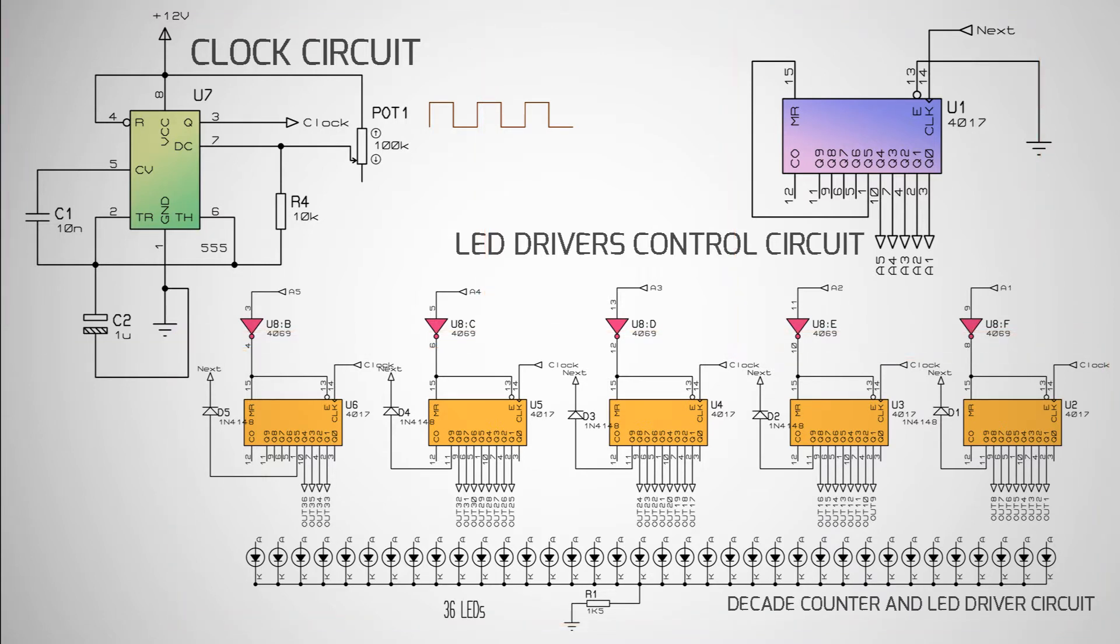First of all, let's examine the integrated circuits we use in detail. If you know how the circuit parts work, you can skip this section. I built the clock circuit using the 555 integrated circuit. I explained in detail how it works in the previous video, so I will not show it again. If you haven't watched the video yet, I suggest you take a look.